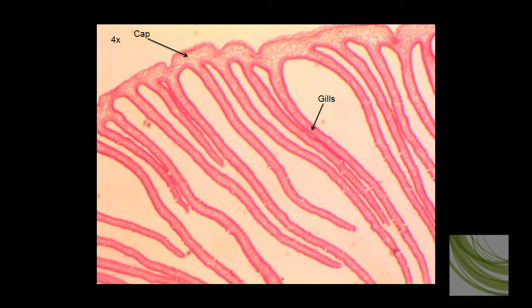Here is our first slide using the 4x objective. You can't see a whole lot here. We can see the cap, we can see the gills, and there are several gills here which I have labeled. Further in, which we cannot see at this magnification, is the stalk.